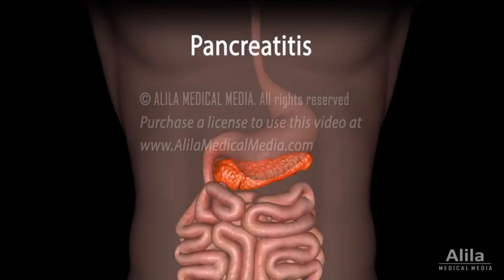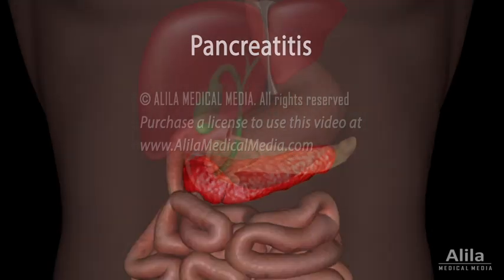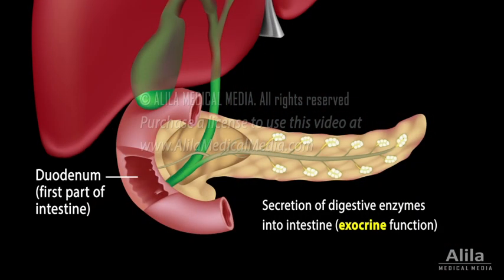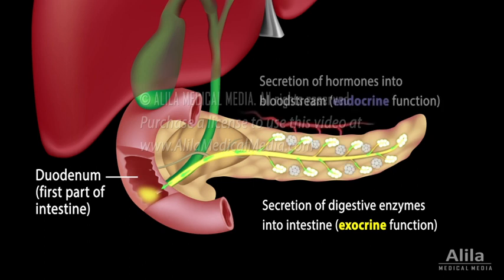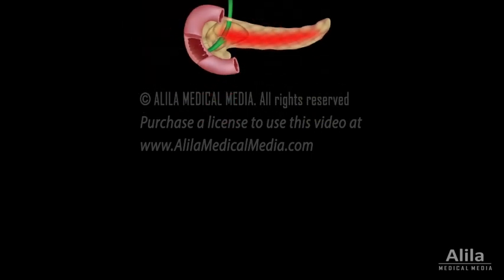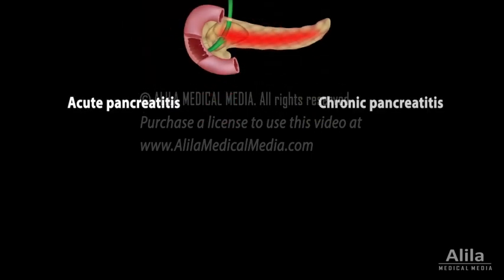Pancreatitis is inflammation of the pancreas. The pancreas is both an exocrine gland producing digestive enzymes and an endocrine gland secreting hormones that regulate blood sugar levels. Pancreatitis can be acute or chronic.